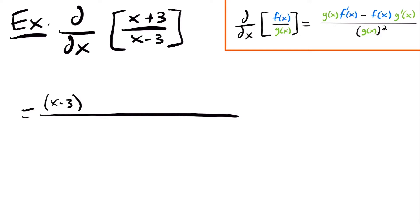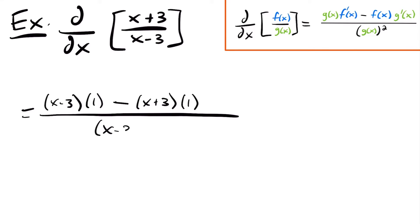We're going to have the derivative of x plus 3 and that's going to be 1. The derivative of x is 1 and the derivative of 3 is 0, so 1 plus 0 is 1. And then we're going to subtract the numerator function x plus 3 multiplied by the derivative of the denominator function, which in this case would be 1 as well because the derivative of x is 1 and the derivative of negative 3 is 0. So we'll have 1, and then this will all be divided by our denominator squared.